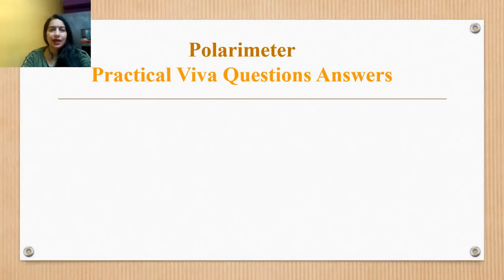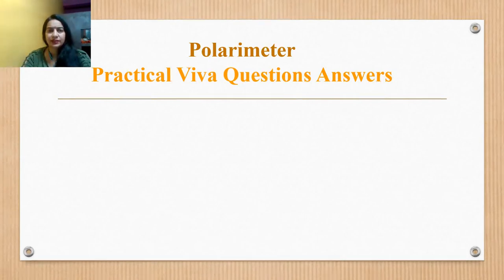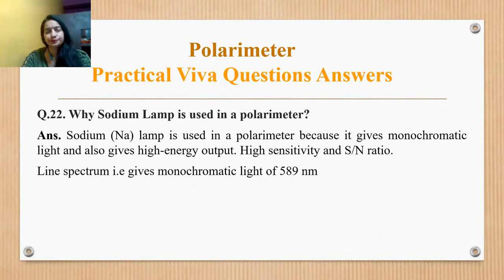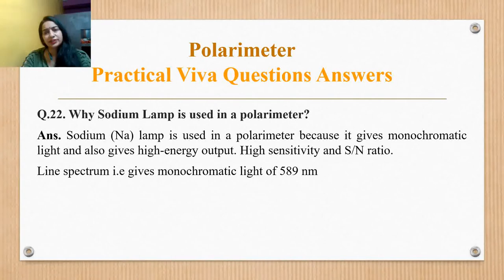Why is a sodium lamp used in a polarimeter? Because it gives monochromatic light and is highly sensitive. The signal-to-noise ratio is good. It gives monochromatic light of 5,890 angstroms or 589 nanometers.